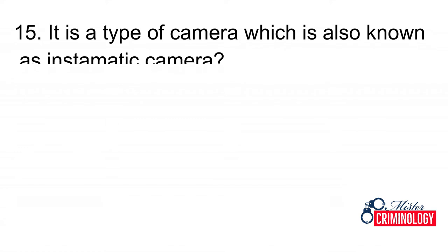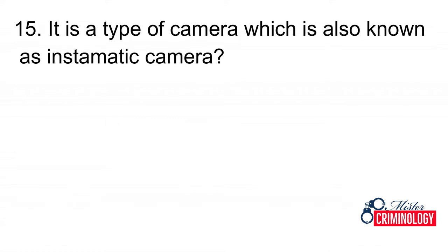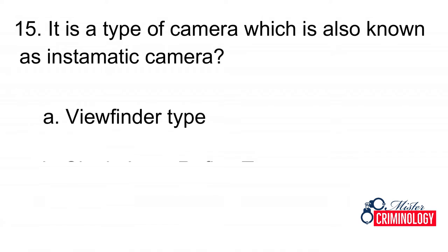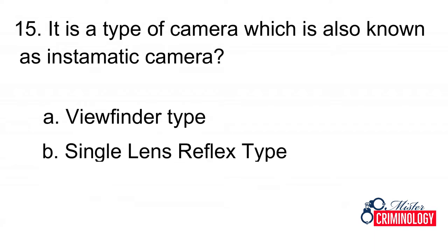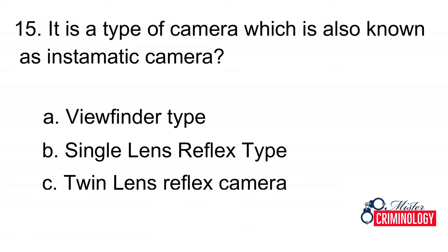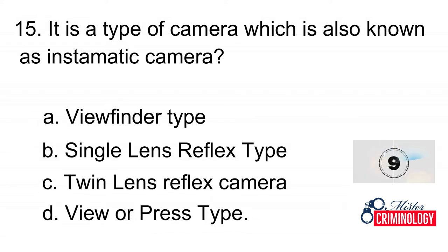Question 15: It is a type of camera which is also known as the Instamatic camera. A. Viewfinder type, B. Single lens reflex type, C. Twin lens reflex camera, D. View or press type. Answer: A. Viewfinder type.